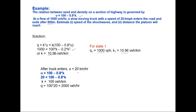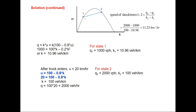After the truck enters, the truck speed is 20 km/h. Substituting u = 20 into the Greenshield equation gives k₂ = 100 vehicles/km, and flow q₂ = 2000 vehicles/hour. That is state 2: q₂ = 2000 vehicles/hour, k₂ = 100 vehicles/km. The speed of shockwave 1-2 = (q₂ - q₁) / (k₂ - k₁) = (2000 - 1000) / (100 - 10.96) = 11.23 km/h. So the shockwave forming the platoon will travel at 11.23 km/h.